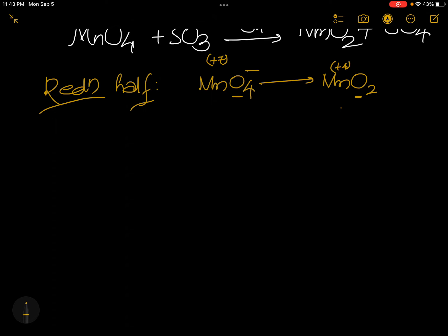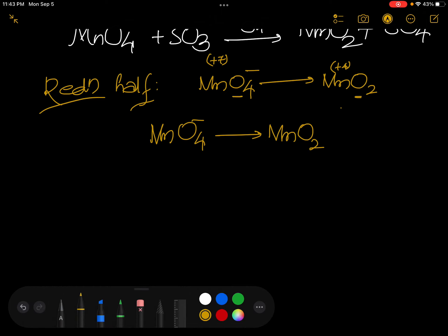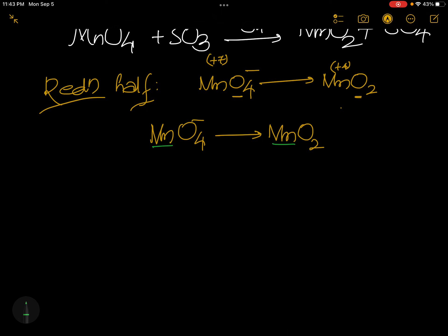So how to balance this expression? First MnO4 minus gives rise to MnO2. Fine. Now here only will do. 1 manganese, 1 manganese, 4 oxygens, 2 oxygens.